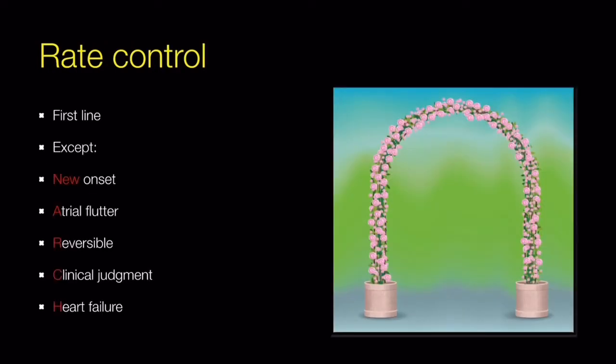Coming to the first R — rate control strategy. It is the first-line treatment of atrial fibrillation, except in some cases. These exceptions can be remembered using the mnemonic NEW ARTS. NEW means when atrial fibrillation is new onset, that is less than 48 hours.